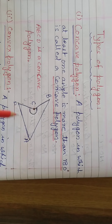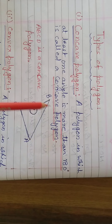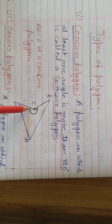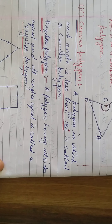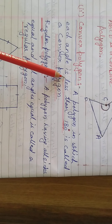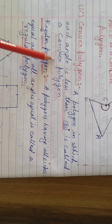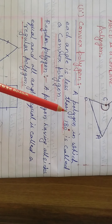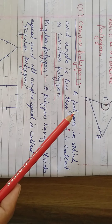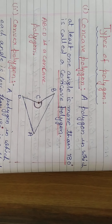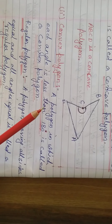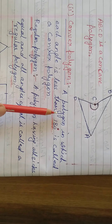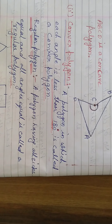See this figure — A, B, C, D. In a concave polygon, at least one angle is more than 180 degrees. Convex polygon: a polygon in which each angle is less than 180 degrees is called a convex polygon. It is very easy to remember.